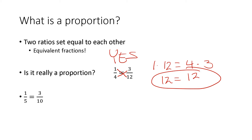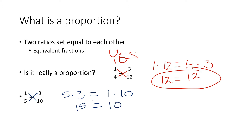For example, here we have one over five equals three over ten. Is this a proportion? Let's multiply our corners: one times ten, three times five. Five times three equals fifteen, one times ten equals ten. Fifteen is not equal to ten, so no, this one is not a proportion.